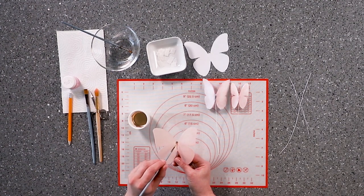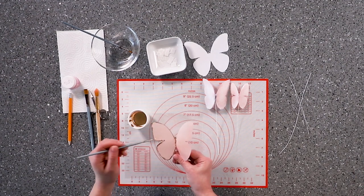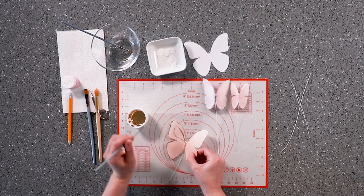Colour the butterflies with a thin brush. I used a golden colour. It's a golden highlighter mixed with, you guessed it, vodka.